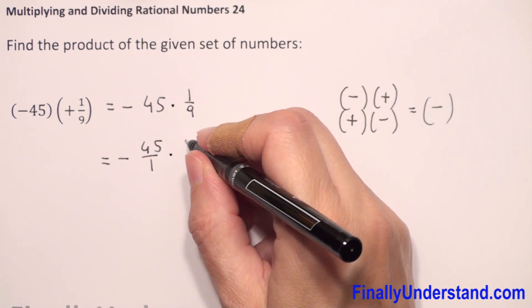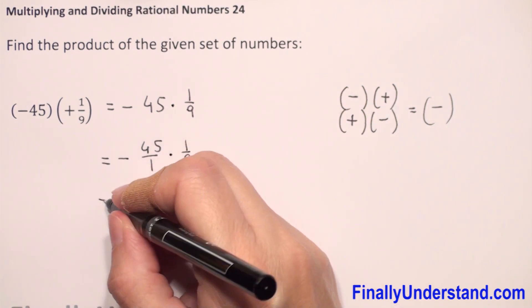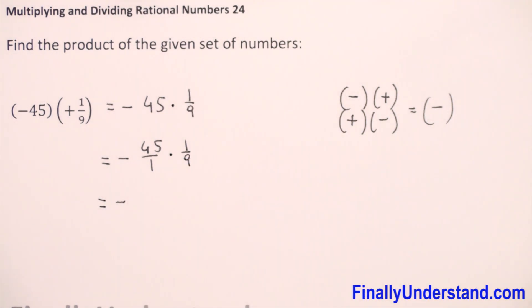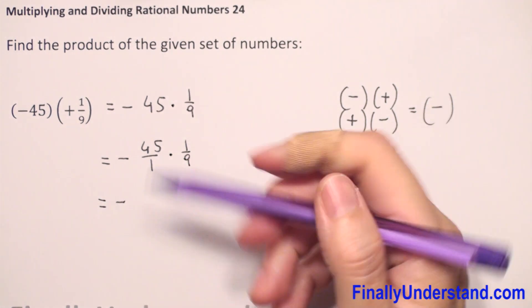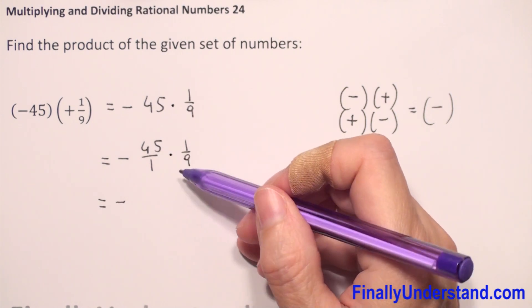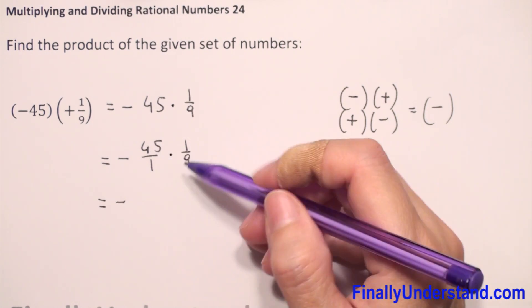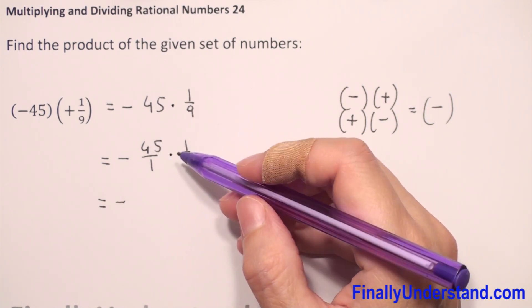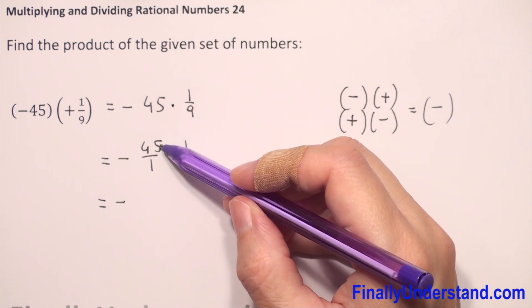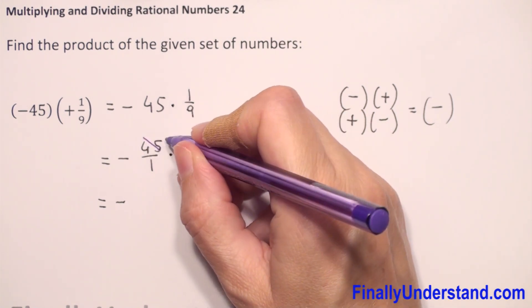Times 1 over 9. Next, negative sign we copy. We have to reduce if we can, of course. 45 and 9 - we reduce numerator and denominator always. You can divide 45 by 9 which will be 5, and 9 by 9 is 1.